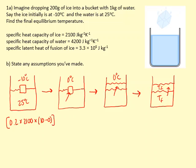And then the energy required to melt the ice at 0 degrees: 0.2 times 3.3 times 10 to the 5.